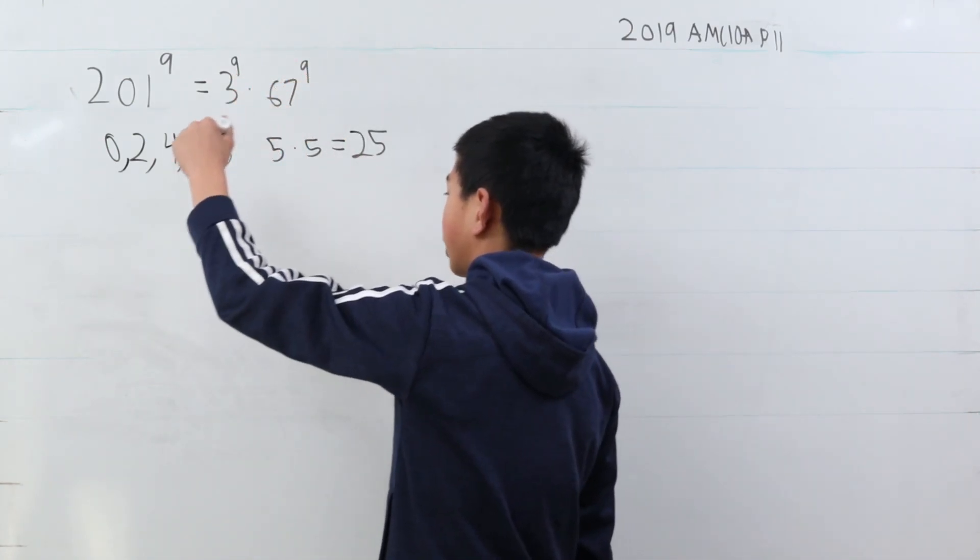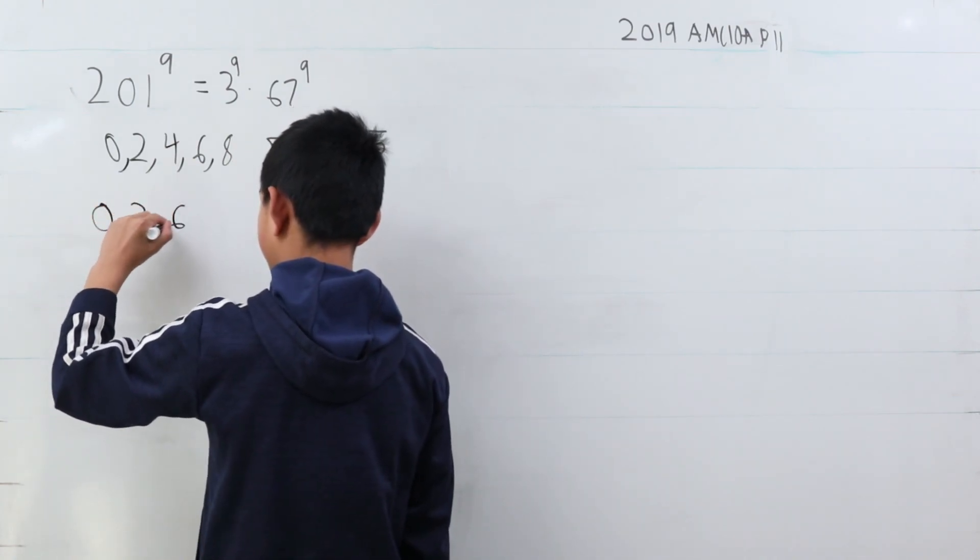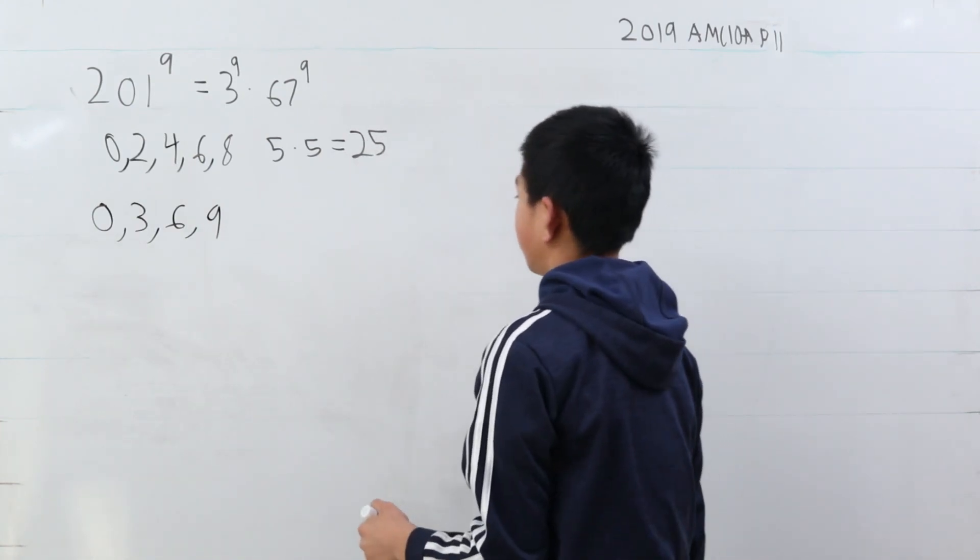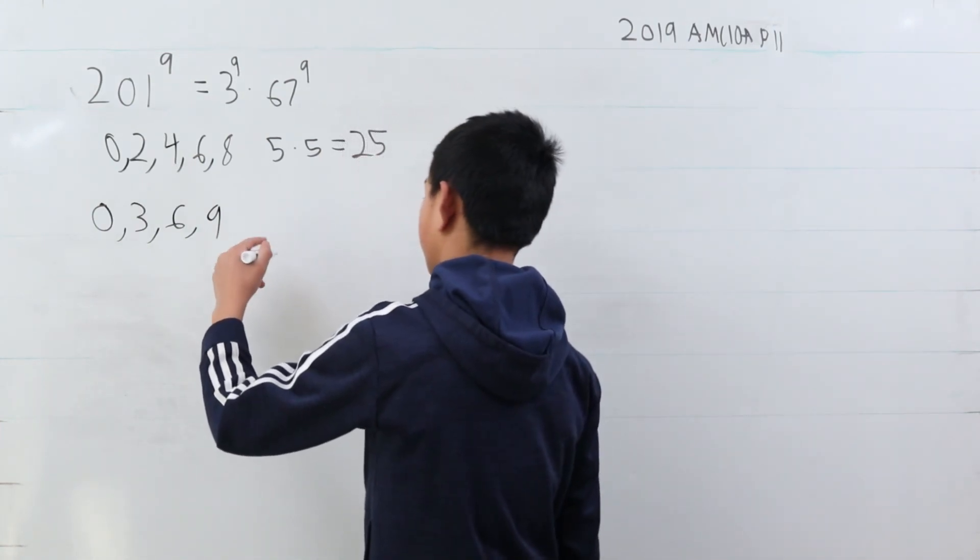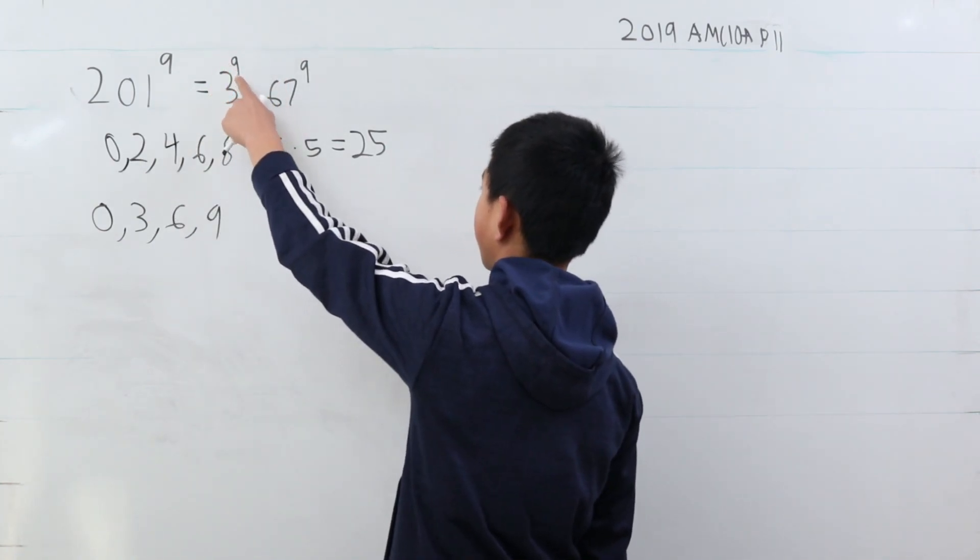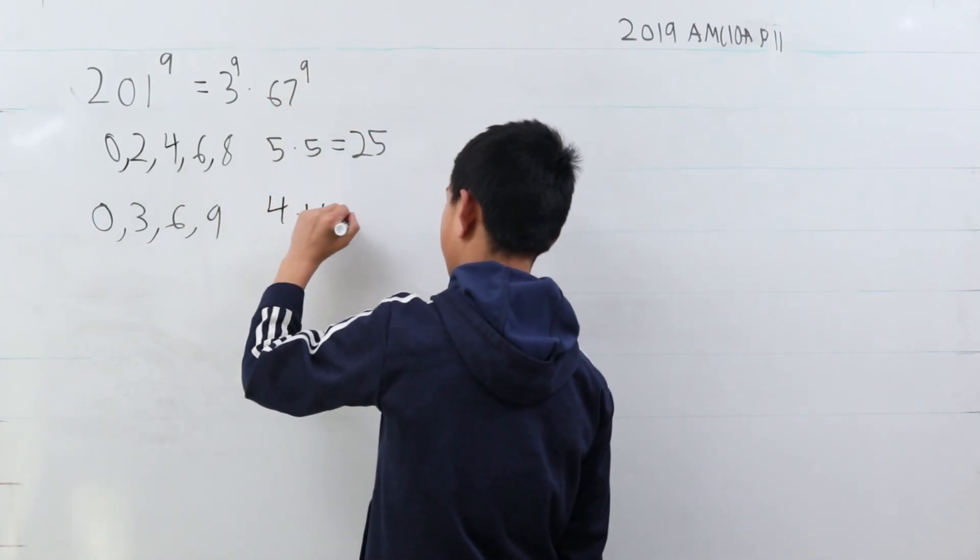Now, for the cubes, we can use any multiple of 3: 0, 3, 6, or 9. There is less than the evens, but there's still 4. So, similar logic. Since there's two terms here, there's four possibilities for this power and 4 for that one. So, 4 times 4 is 16.